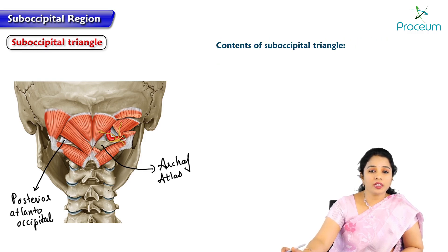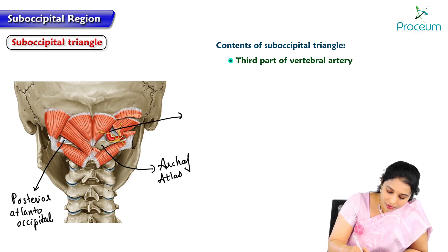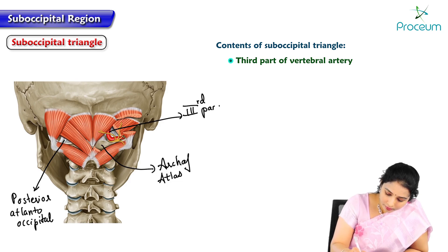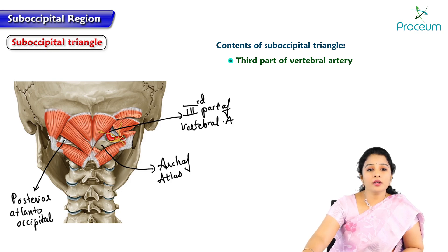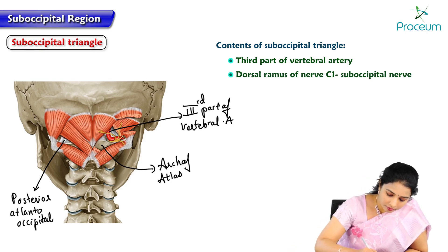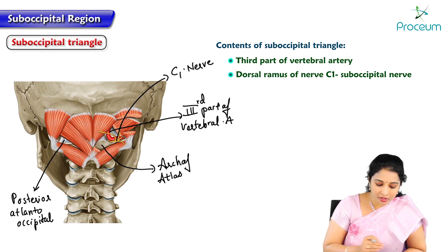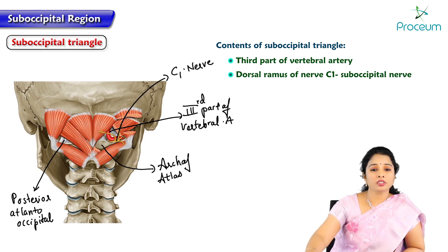The contents of the triangle include the third part of the vertebral artery — this artery which is looping here is the vertebral artery — and the dorsal ramus of C1 nerve, the suboccipital nerve, which supplies all these suboccipital muscles. We can see the suboccipital nerve ramifying here to innervate all these suboccipital muscles.